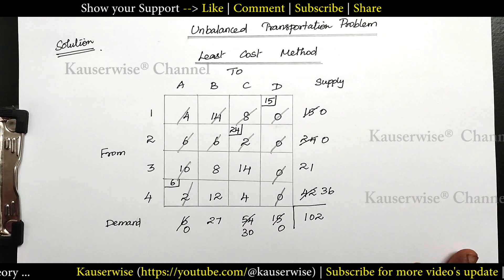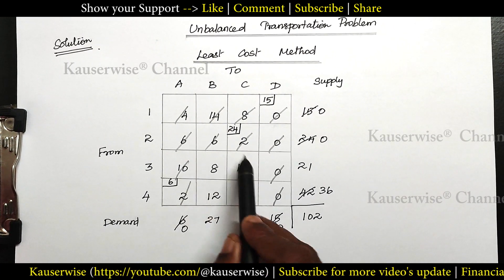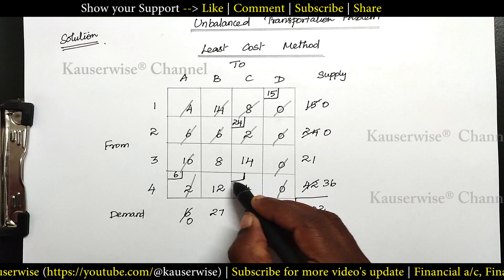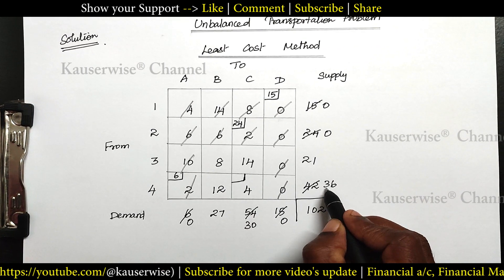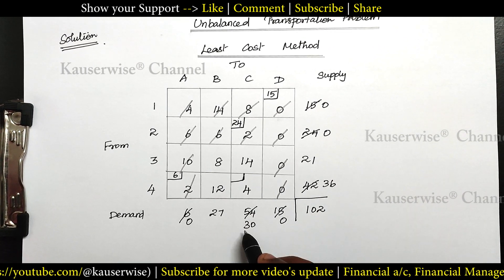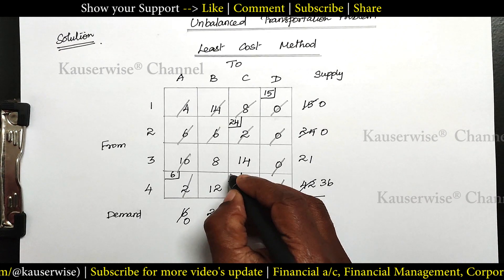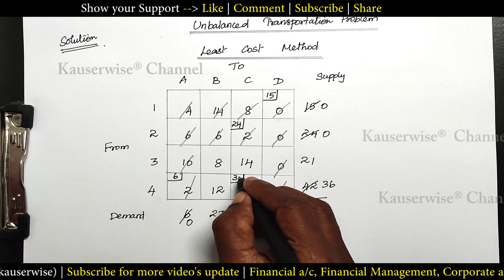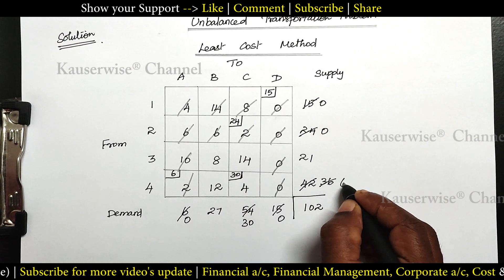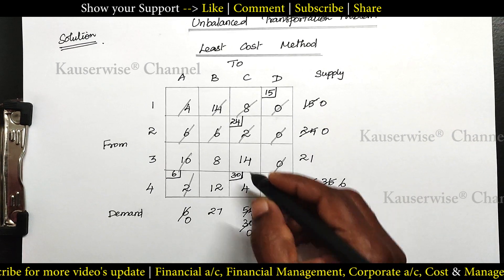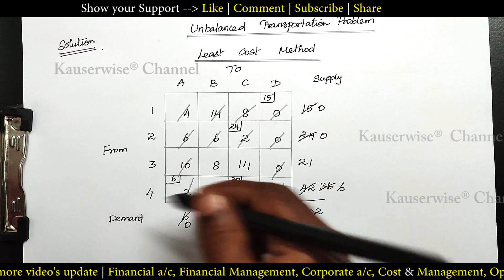Again follow the same procedure. The least value is 4. Compare demand and supply: 36 and 30 — 30 is the least value. So allocate 30; balance becomes 6 and supply becomes 0. This column gets cancelled.